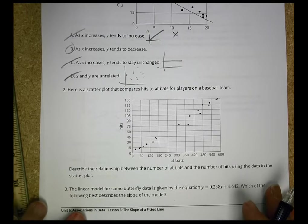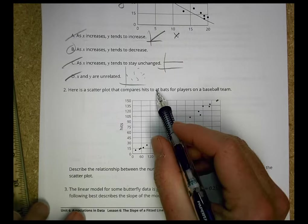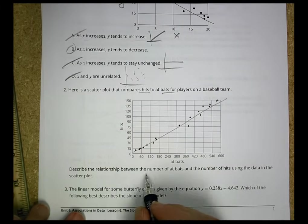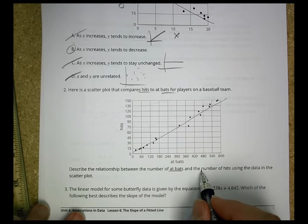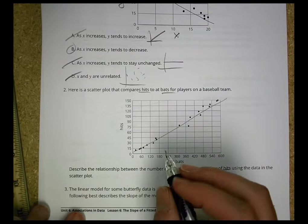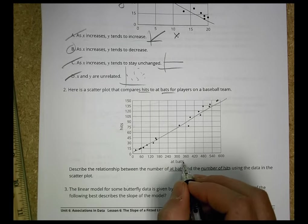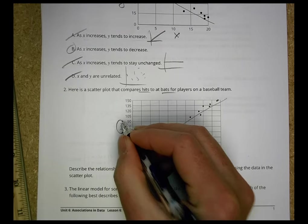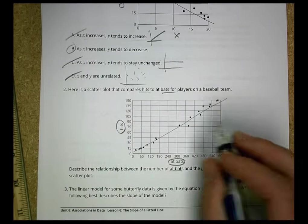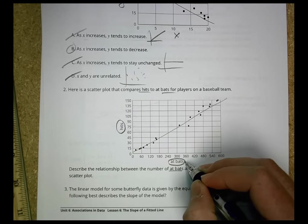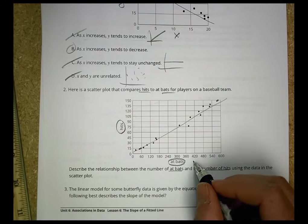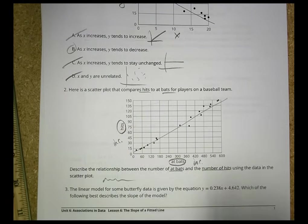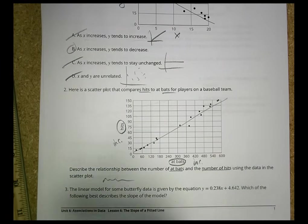Number two. Here's a scatter plot. It compares hits to bats for players on a baseball team. Something like that. Describe the relationship between the number of at-bats and the number of hits using the data in the scatter plot. So what could we say? We would say the more at-bats a batter has, the more hits they are going to have. So hits increases with more times at bat. We have an increase and an increase for both of those there. So write that out in words to help that make sense to you.